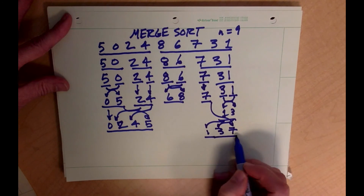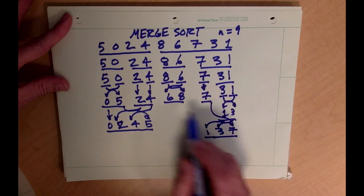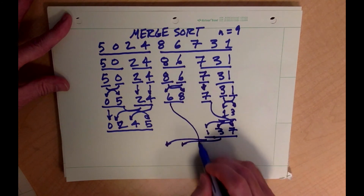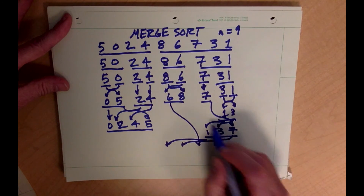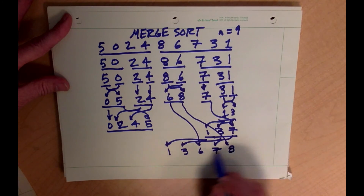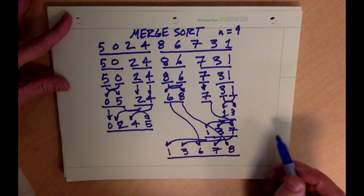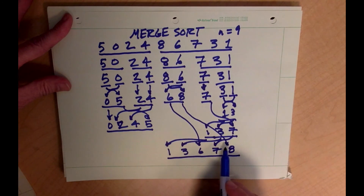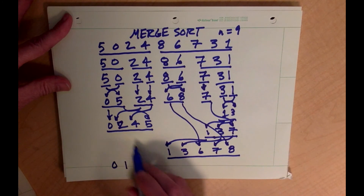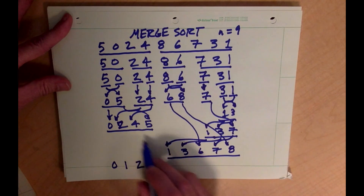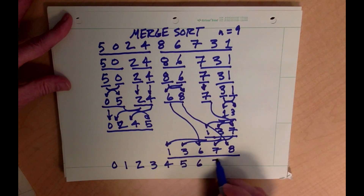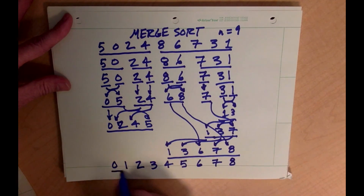Now I'll combine these two lists. I'll have the 1, the 3 coming over, the 6 coming over, the 7, and then the 8, to produce 1, 3, 6, 7, 8. The very last step in our merge sort is to combine these two sorted lists. That becomes 0, 1, 2, 3, 4, and 5, and finally the remaining elements 6, 7, 8. So that's the merge sort algorithm.